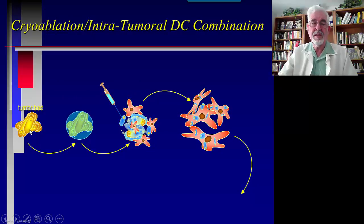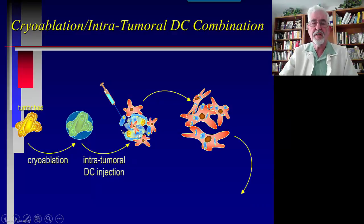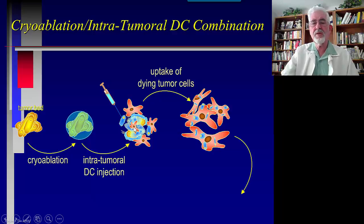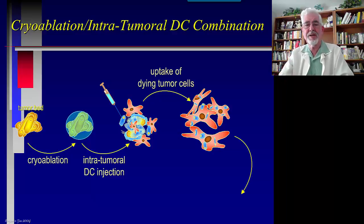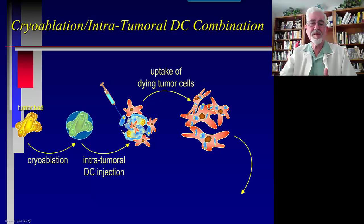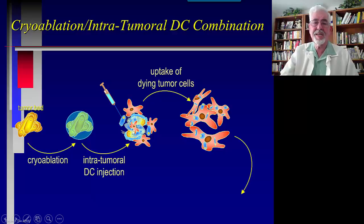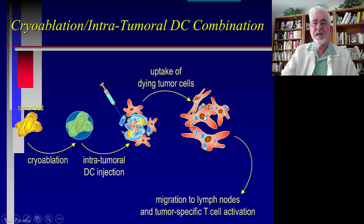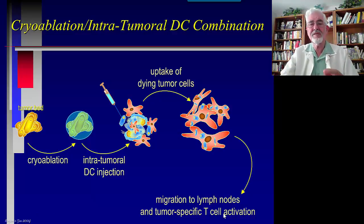To summarize: in this schema, cryo ablation is combined with intratumoral dendritic cell injection directly into the area. There is uptake of dying tumor cells with antigen — but they can choose a variety of antigens, unlike the Provenge treatment where dendritic cells are trained outside the body with only one antigen (prostatic acid phosphatase). Here, dendritic cells are brought directly to the battlefield to choose from the right menu of antigens, then migrate to the lymph nodes to train specific T cell activation against specific cancer antigens.